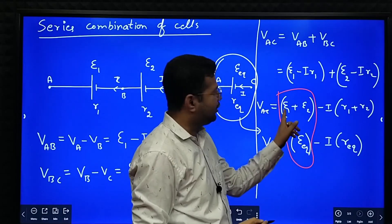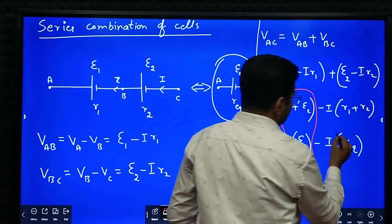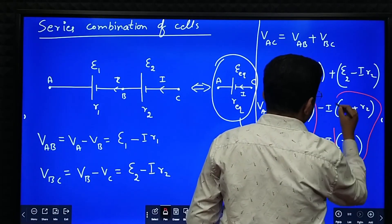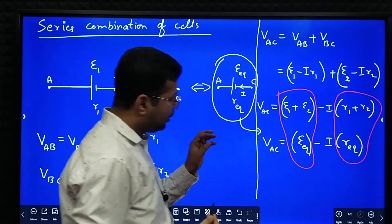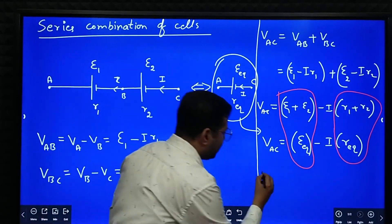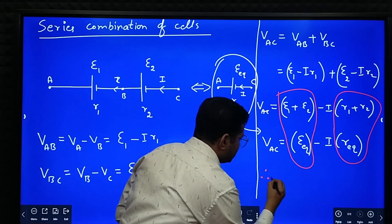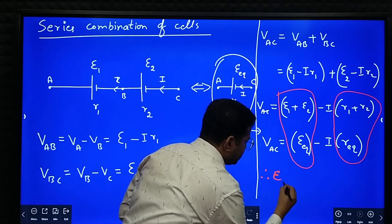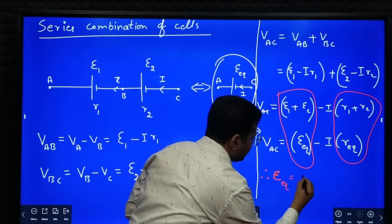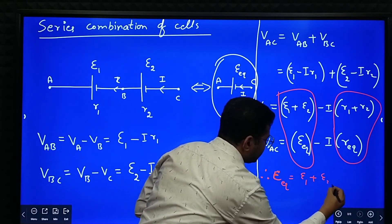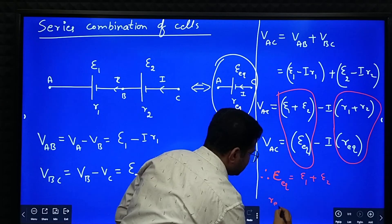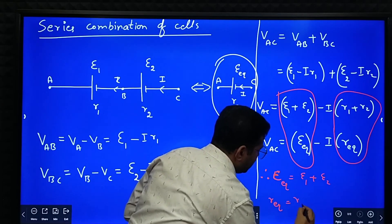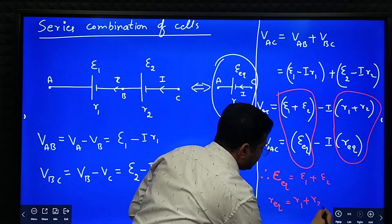Now what happened? We can try to understand. E equivalent is analogous to E1 plus E2. R equivalent is analogous to R1 plus R2. So if you observe these two equations, we can write therefore E equivalent is equal to E1 plus E2. R equivalent is equal to R1 plus R2.